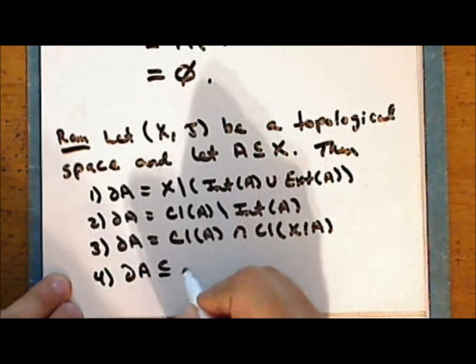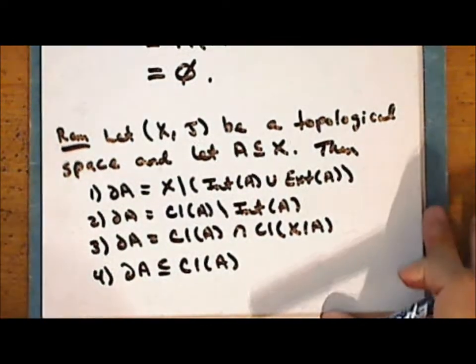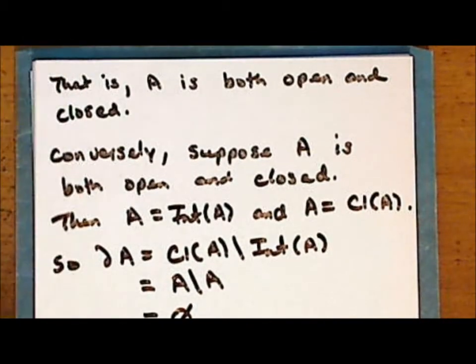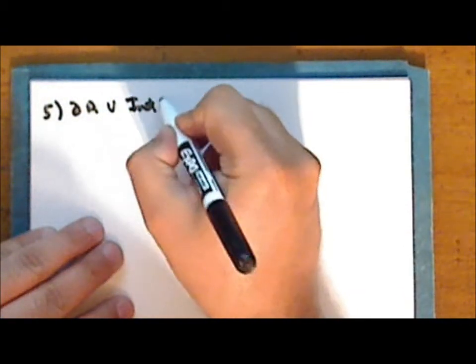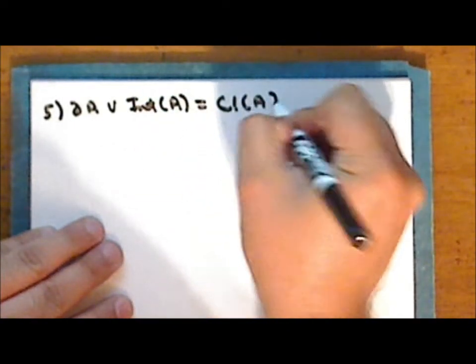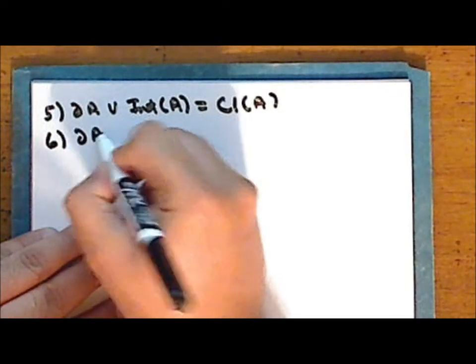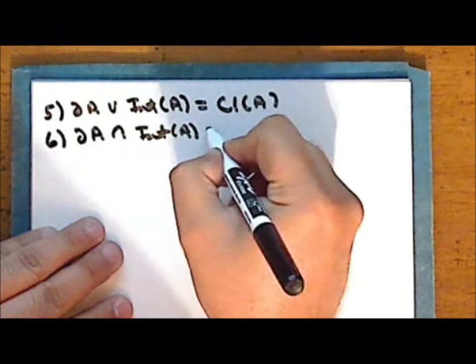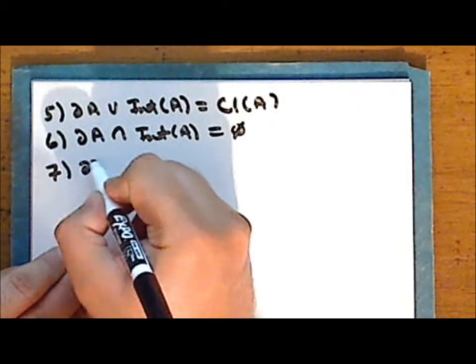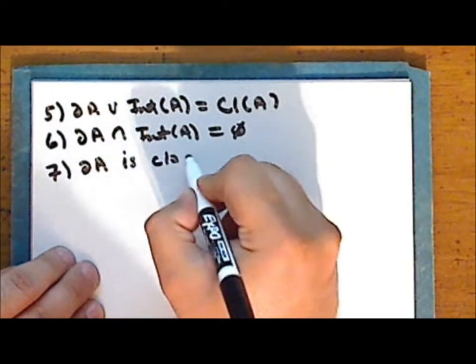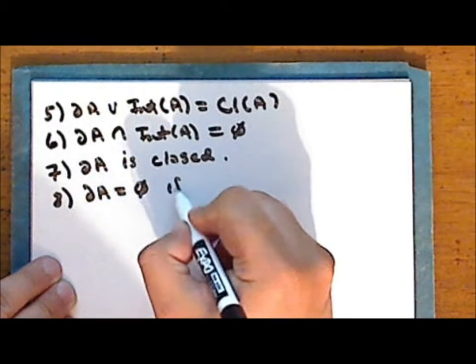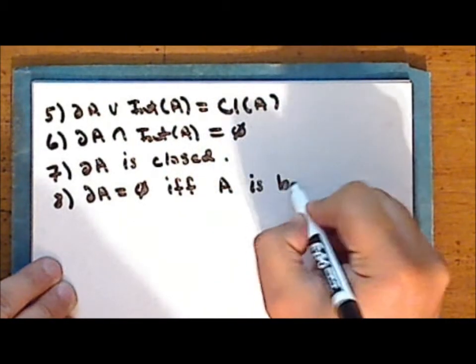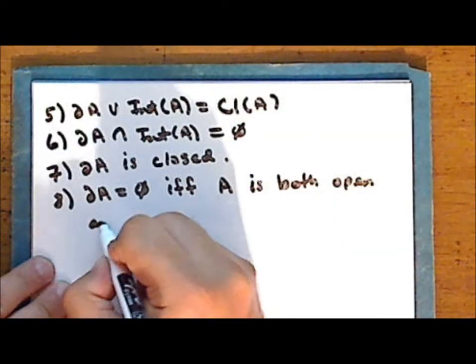The boundary is always a subset of the closure of A. The union of the boundary of A with the interior of A is the closure of A. The intersection of the boundary of A with the interior of A is empty. The boundary of A is always a closed set. And the boundary of A is empty if and only if the set A is both open and closed.